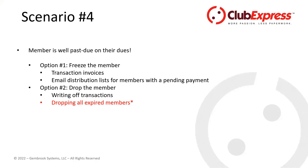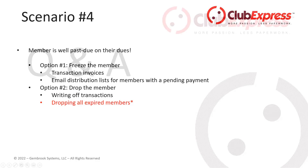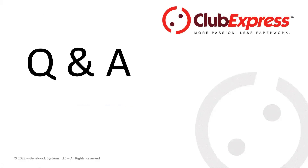So those were the four major scenarios we focused on today: a member passing on, a member needing to be banned and increasing site security, what to do in the case of divorce or separation in a family membership, and what to do with members who are past due on their dues.